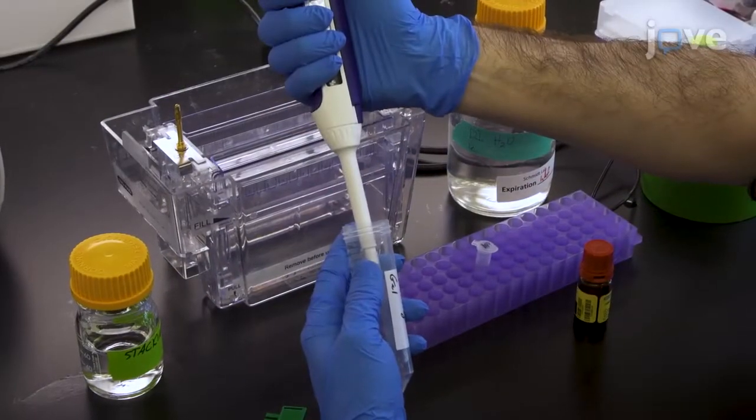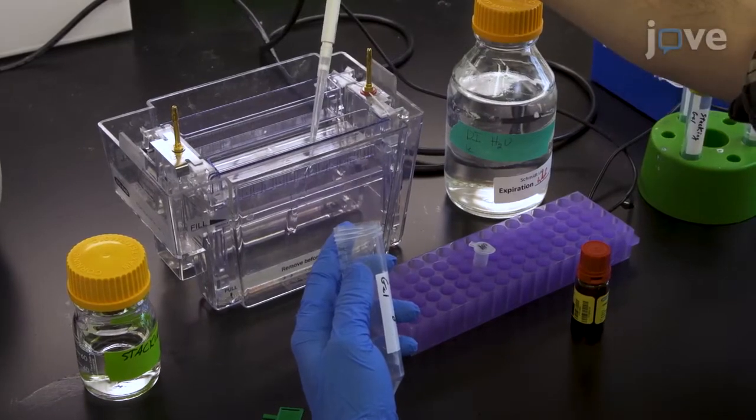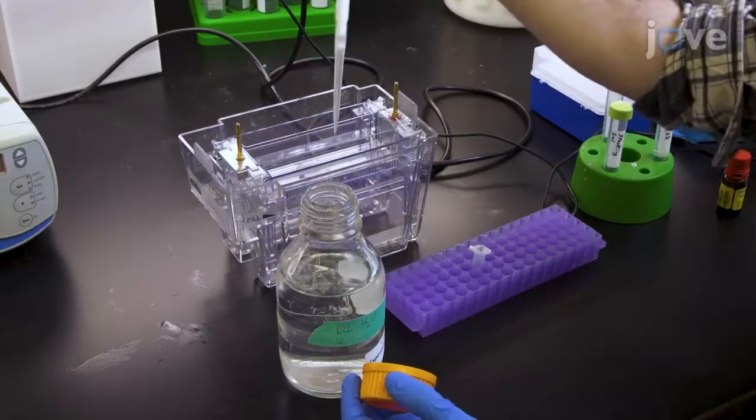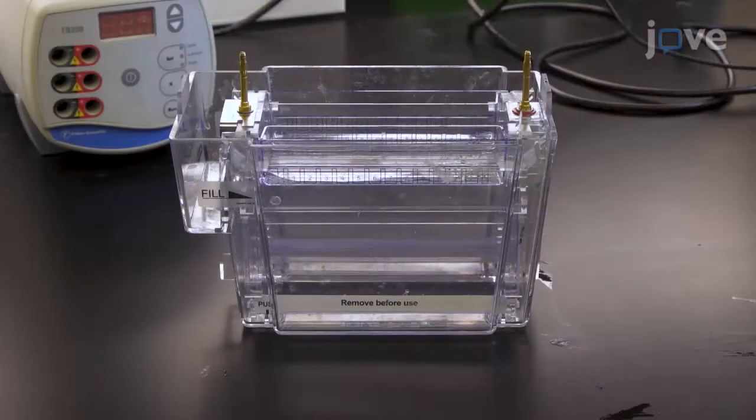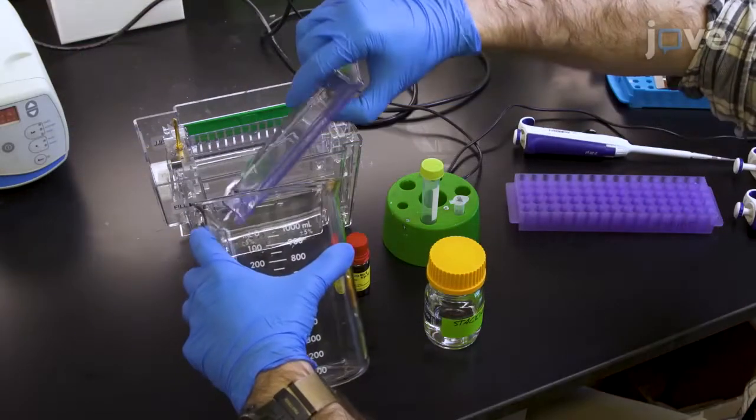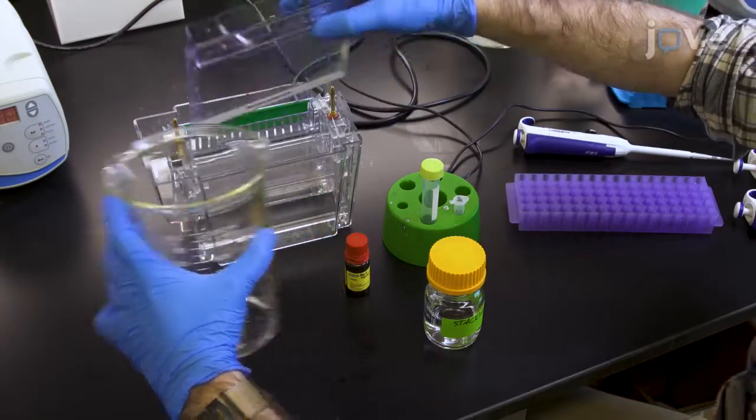Quickly add 10 milliliters of the activated polyacrylamide gel solution to the cassette using a pipette. Overlay with 2 milliliters of deionized filtered water and allow the resolving gel to polymerize for 30 minutes. After the resolving gel has fully polymerized, discard the overlaid water.